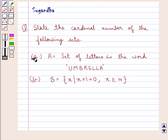First, set A equals the set of letters in the word 'umbrella.' Next, set B equals {x | x+1=0, x∈N}, where N is the set of natural numbers.